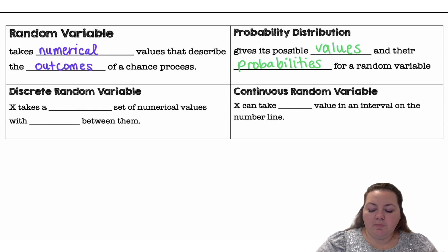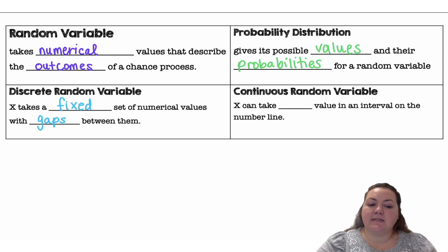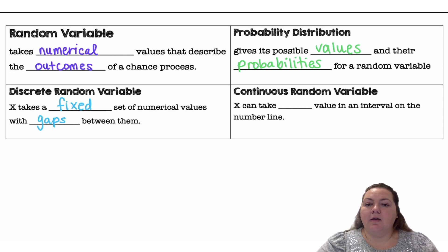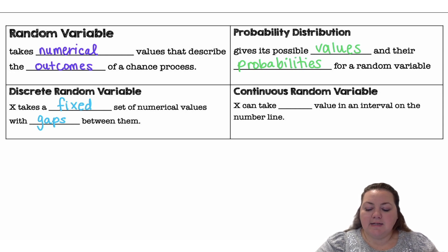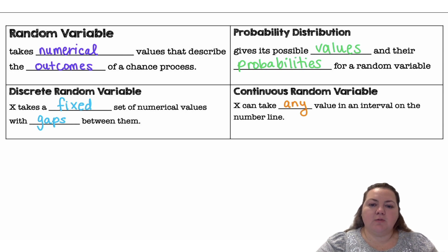A discrete random variable, which we usually denote with a capital letter X, takes a fixed set of numerical values with gaps between them. A continuous random variable, also denoted with a capital letter X, can take any value in an interval on the number line. So discrete is where you have set numbers with gaps, and continuous is where it can be any value.